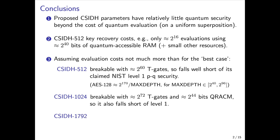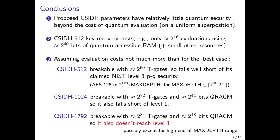In addition, CSIDH-1792 was proposed for NIST level 3. We find that this is breakable with about 2^84 T-gates and only about 2^48 bits of quantumly accessible classical memory, so it also does not reach level 1, possibly except for the very high end of the max depth.